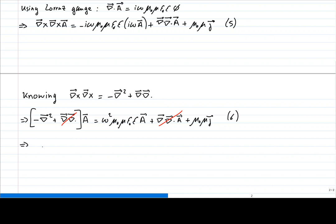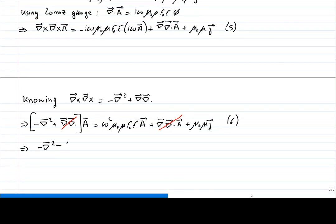We are left with something simpler. We move the omega-squared mu-naught mu epsilon-naught epsilon times A term to the left-hand side, giving us (nabla-squared plus omega-squared mu-naught mu epsilon-naught epsilon) applied to the vector potential A, with mu-naught mu times J on the right-hand side.